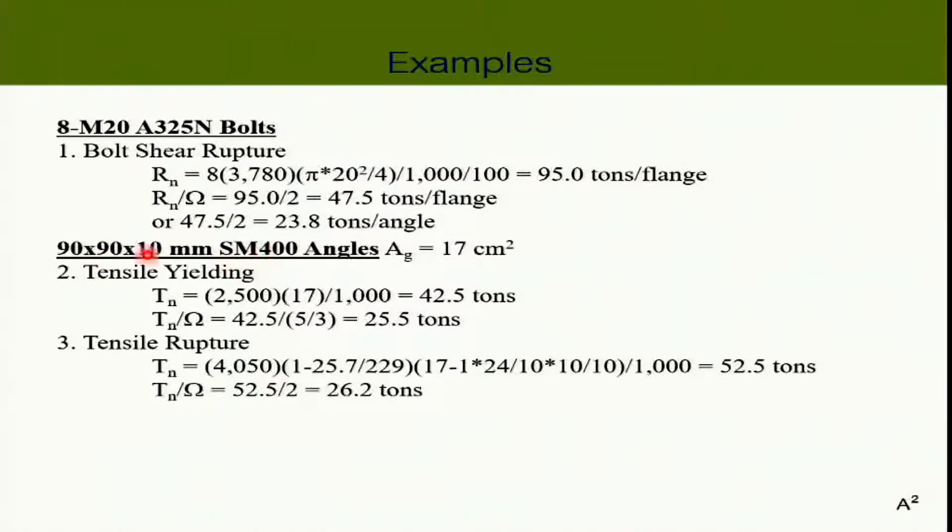And now we start considering the angle. The gross area of the angle itself is 17 square centimeters. And therefore, the tensile yielding becomes just F_Y multiplied by the area. And in the end, to get the design strength, I just divide that by the factor of safety. So we have 42.5 tons. Then divide by factor of safety, 25.5 tons.